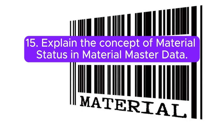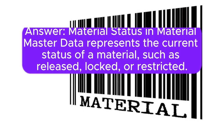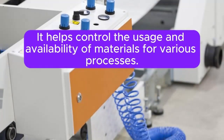Question 15: Explain the concept of Material Status in Material Master data. Material Status in Material Master data represents the current status of a material, such as released, locked, or restricted. It helps control the usage and availability of materials for various processes.